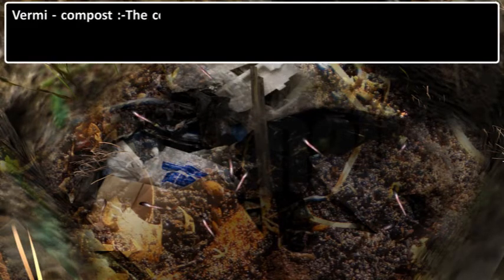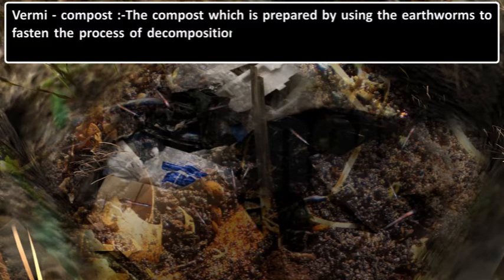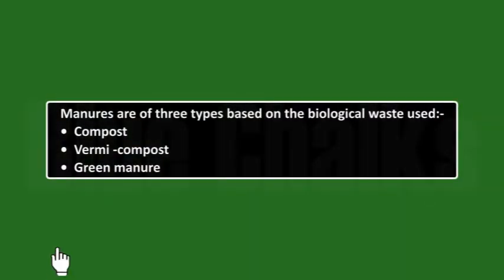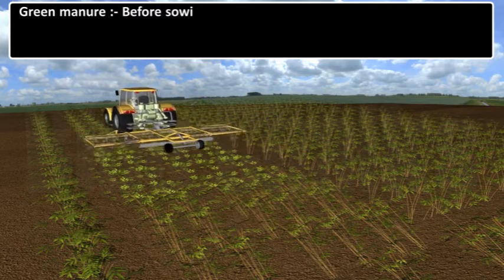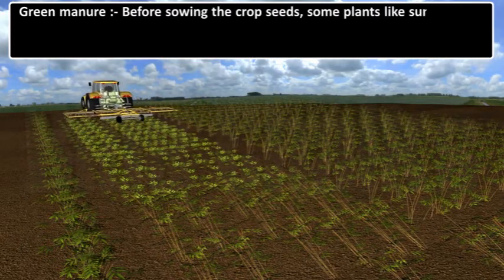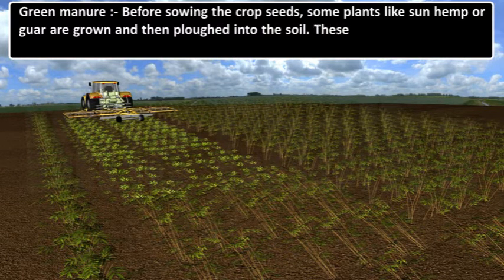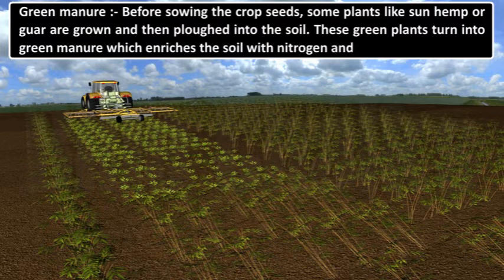Vermicompost is prepared by using earthworms to fasten the process of decomposition of plant and animal waste. Green manure: before sowing the crop seeds, some plants like sunhemp or guar are grown and then ploughed into the soil. These green plants turn into green manure, which enriches the soil with nitrogen and phosphorus.